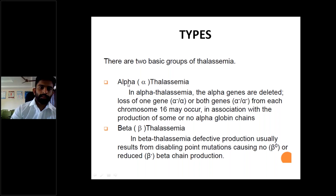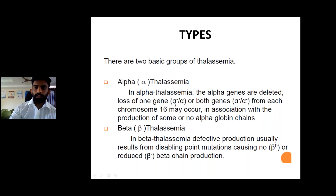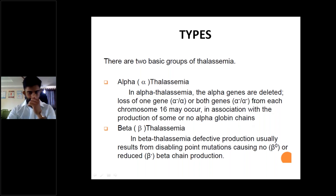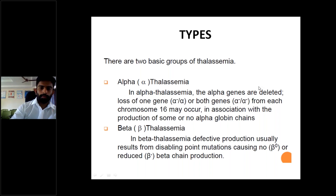There are two basic groups of thalassemia. In alpha thalassemia, the alpha genes are deleted — loss of one gene (alpha minus/alpha) or both genes (alpha minus/alpha minus) on chromosome 16 — resulting in some or no alpha globin chain production. The alpha chain can be normal, abnormal, or absent. In beta thalassemia, defective production usually results from disabling point mutations causing no beta (beta-zero) or reduced beta gene production (beta-plus).